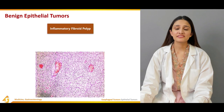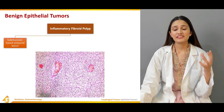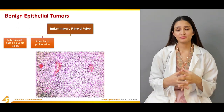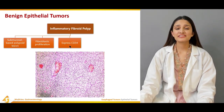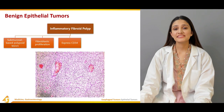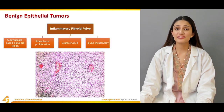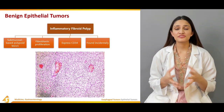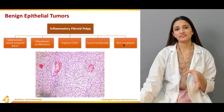Inflammatory fibroid polyp is another type of benign epithelial tumor. Endoscopically, it appears as a submucosal-based polypoid lesion with fibroblastic proliferation and an increased number of eosinophils. It typically expresses CD34 and has negative expression of CD117. It is usually asymptomatic, found incidentally during endoscopy for other esophageal disorders, and is non-neoplastic.